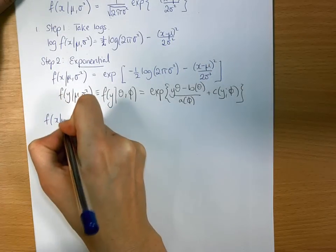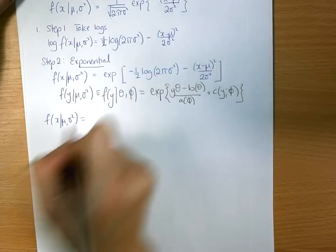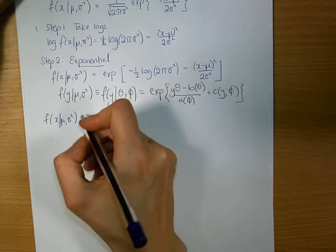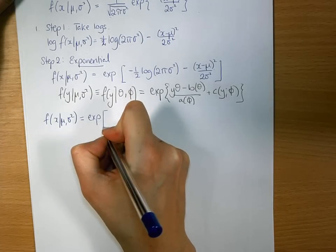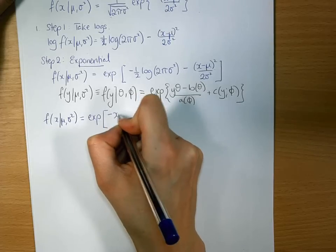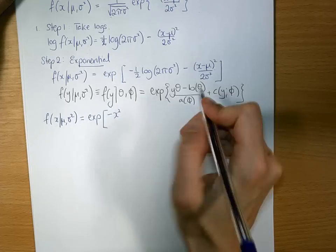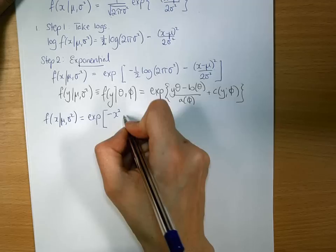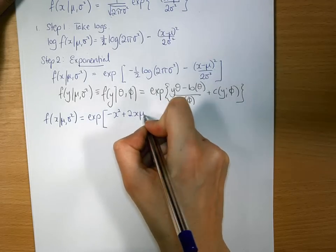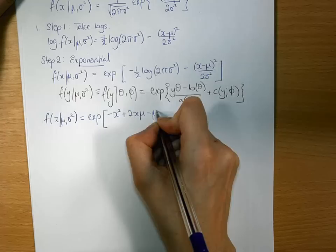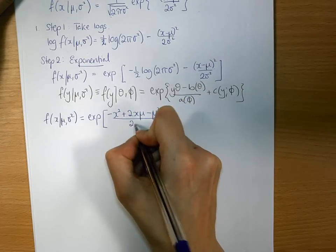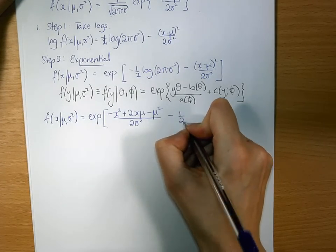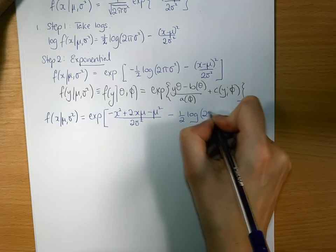So we have f of x given mu sigma squared. I need to expand out that bracket. So I have minus x squared plus 2x mu minus mu squared over 2 sigma squared minus a half log 2 pi sigma squared.